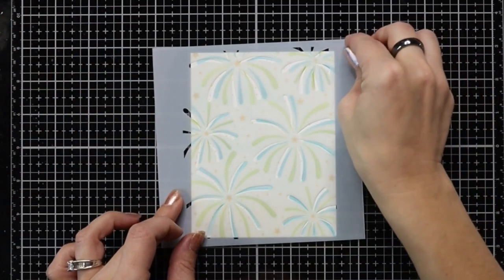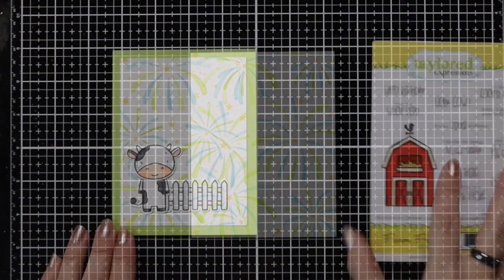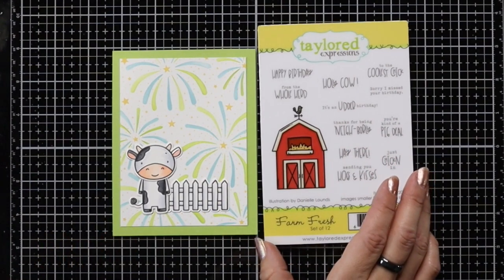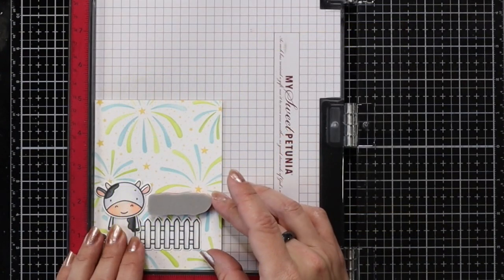Then I can remove that post-it tape and my stencil and I'm going to trim this background down to about three and three quarters by five inches. I will be adding it to a piece of Granny Smith cardstock that I have cut to four and a quarter by five and a half.